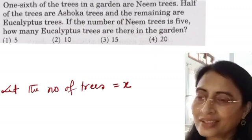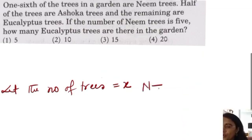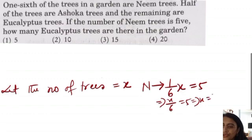By using this only, we can get the number of trees. One sixth of X, that means neem trees, is equal to 5. X by 6 is equal to 5, implies X is equal to 30. Total number of trees is equal to 30. So neem trees we know, total number of trees we know.